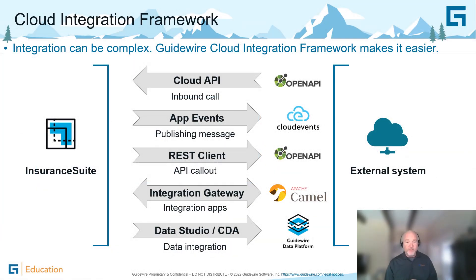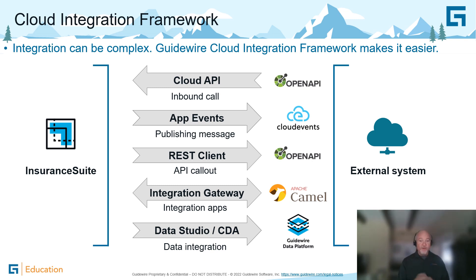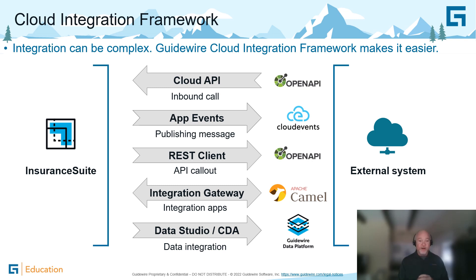The Cloud Integration Framework has evolved in order to make it easier to perform integrations. These include cloud APIs that are inbound to InsuranceSuite via the system APIs. They also include app events where applications can subscribe to particular events — maybe a policy creation or a new claim — and consume those events without any code required at all. Second is the REST client, where inside of InsuranceSuite I can make a call to an external REST application.